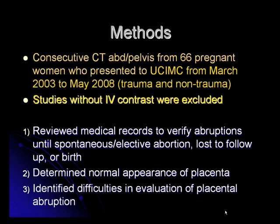In our study, we looked at consecutive CT scans of the abdomen and pelvis from 66 pregnant patients who came to UCI Medical Center from March 2003 to May 2008. Of these, 22 were non-trauma scans and 44 were trauma scans. Any studies done without IV contrast were excluded. We reviewed medical records to verify that abruptions had indeed occurred. We also determined the normal appearance of the placenta and identified difficulties in evaluation of placental abruption. We compared the performance of the original dictated reports with the accuracy of two independent reviewers: a senior reviewer and a trained reviewer who had been trained on all the non-trauma CT scans and then tested on the trauma CT scans.